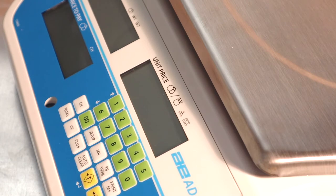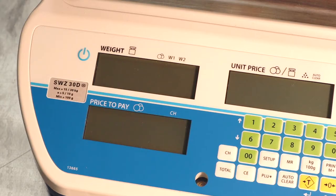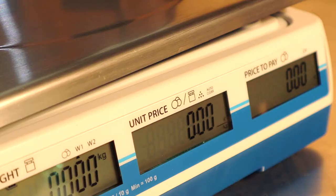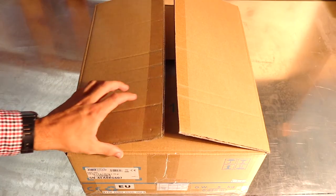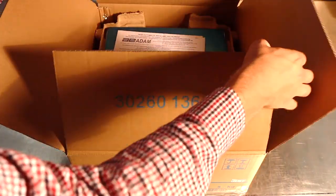100 PLUs mean you can store the weights of your most popular items. Plus, rechargeable battery power and displays front and rear make the Swift an ideal retail scale for shops and market stalls alike.